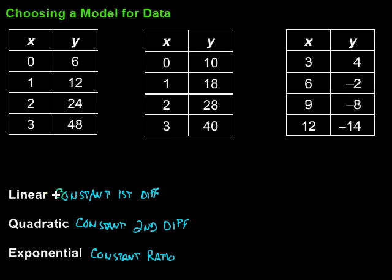Now, if we were to graph these things, we could look for a particular shape. Remember, linear is just a nice straight line. Quadratic gets us into something like the parabola shape. And exponential looks something like this.